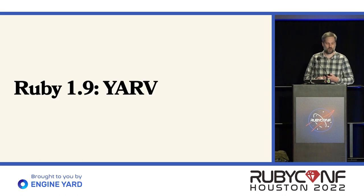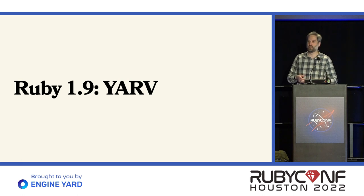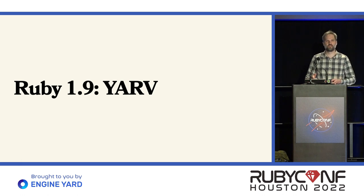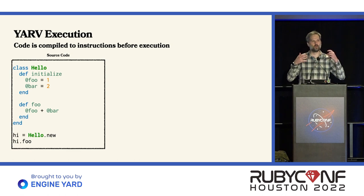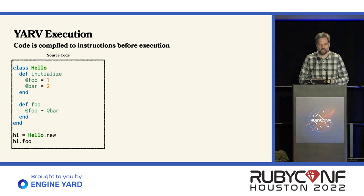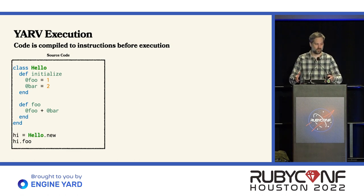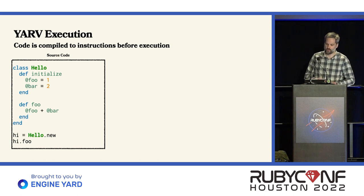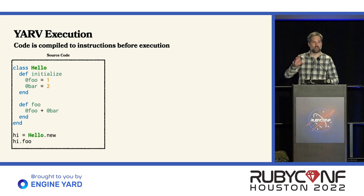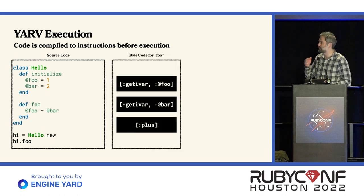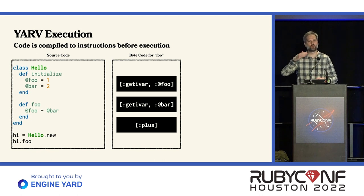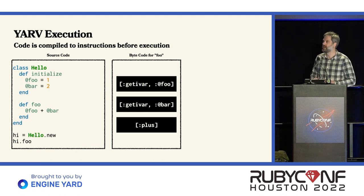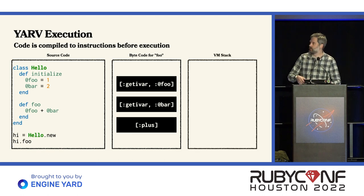Ruby 1.9 came along and introduced a virtual machine. What the virtual machine does is compile all of your code into bytecode and execute that bytecode. The virtual machine takes the foo method, converts it to bytecode, and walks through each of those instructions one at a time executing them. As it executes those instructions, it manipulates a stack. The first thing it does is get IVAR for foo and push one onto the stack, then get IVAR for bar and push two onto the stack. When we execute the plus method, it pops those two values off the stack and pushes the return value onto the stack.